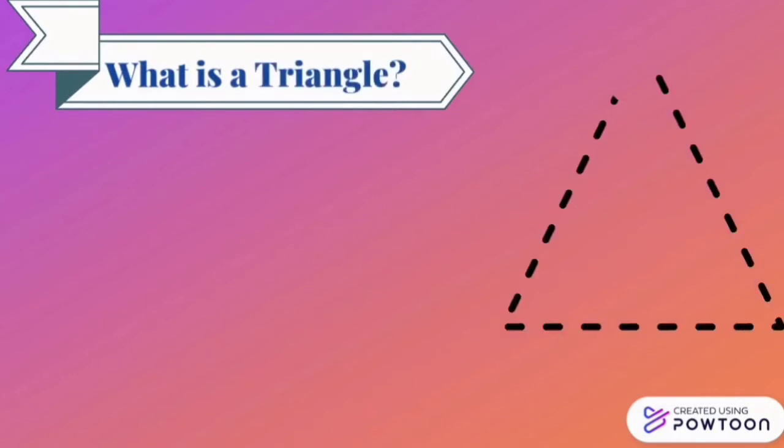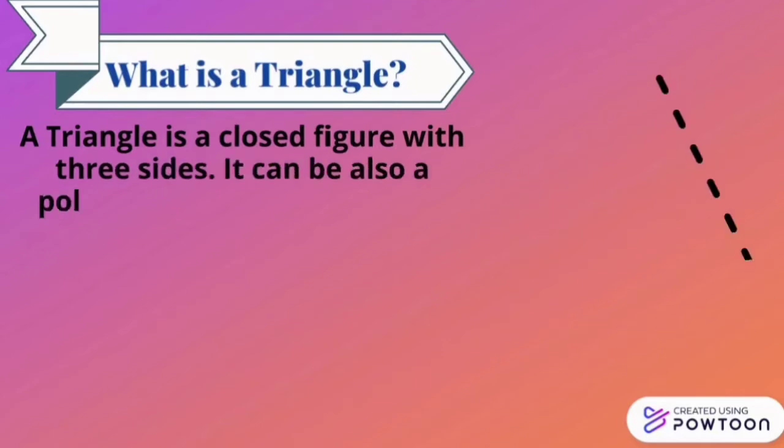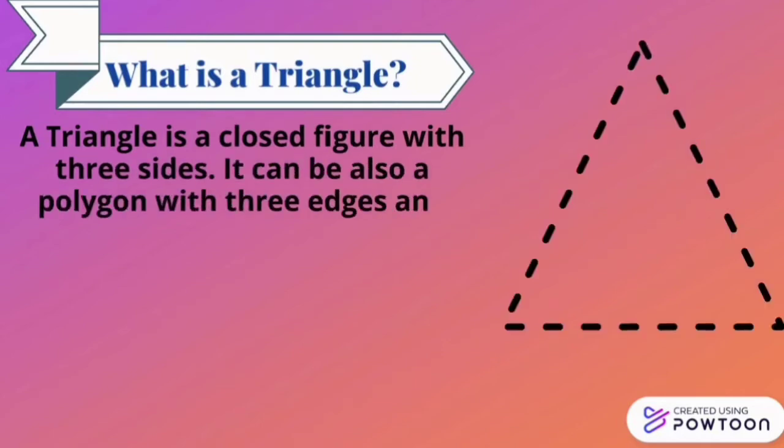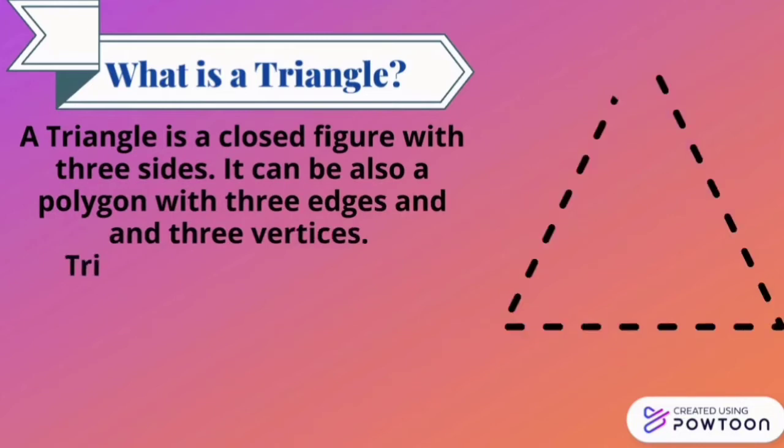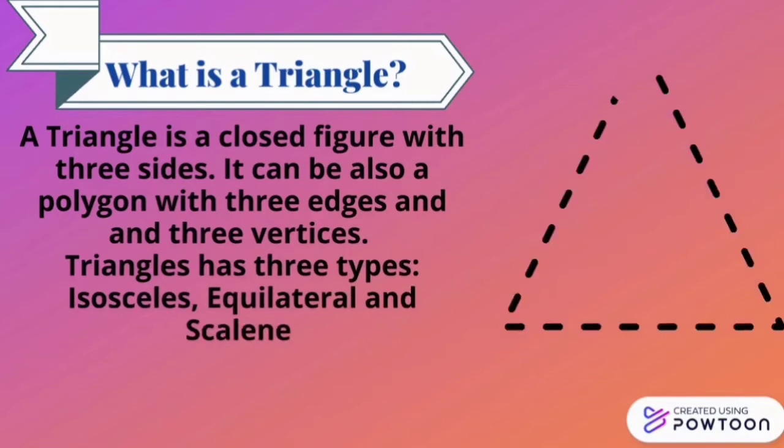What is a triangle? A triangle is a closed figure with three sides. It can also be a polygon with three edges and three vertices. Triangles have three types: isosceles, equilateral, and scalene.